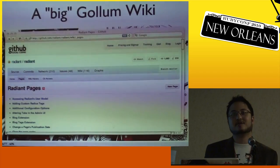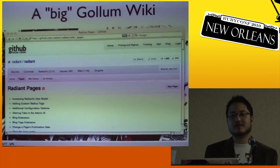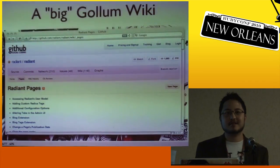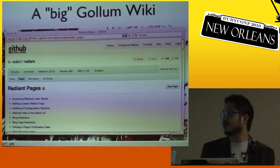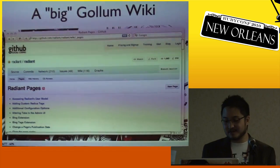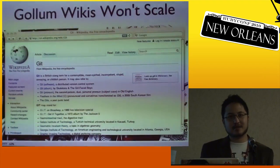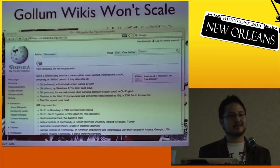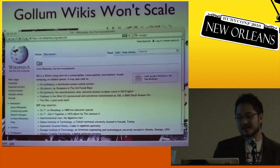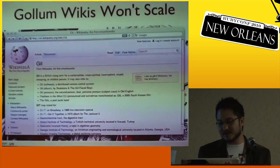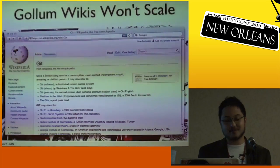Gollum is suited for maybe small to medium sized wikis. This is the Radiant wiki, which brought up some scaling issues early on in beta. It has only 116 pages, which is a lot for GitHub wikis but not much in the grand scheme of things. I had to rewrite some code to make it faster, and as soon as I pushed that, I got a ticket saying someone had a wiki with 30,000 pages and what I pushed was insanely slow. So we still have a little bit of work to do there. Gollum wikis will probably not scale to something like Wikipedia.